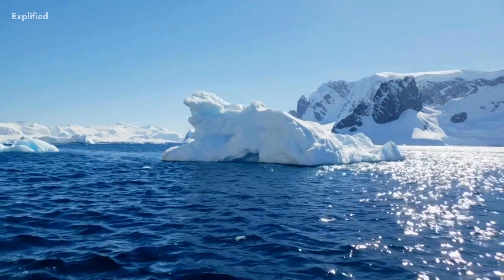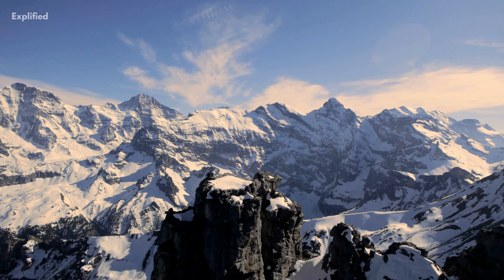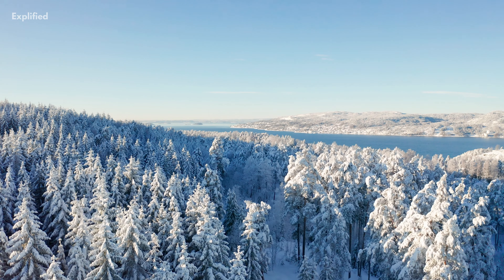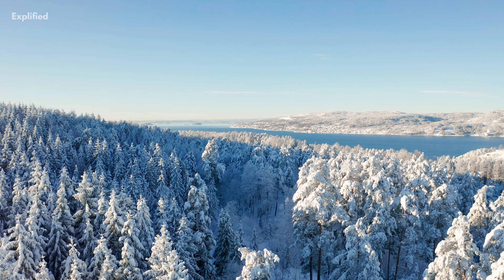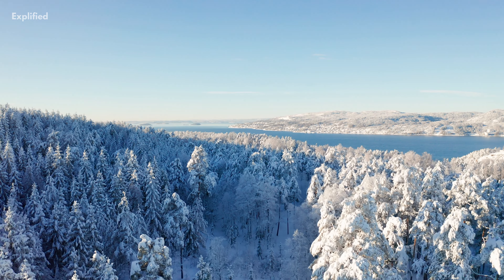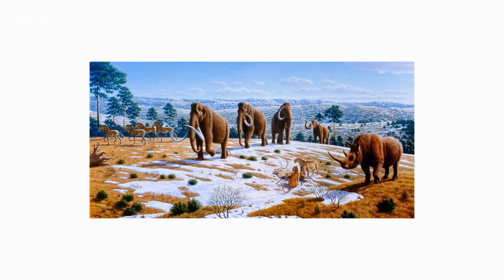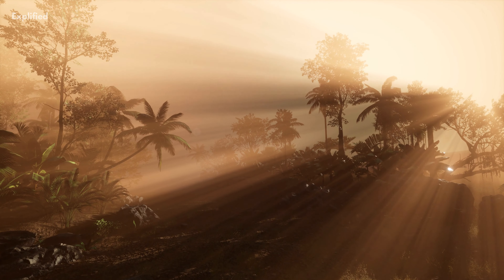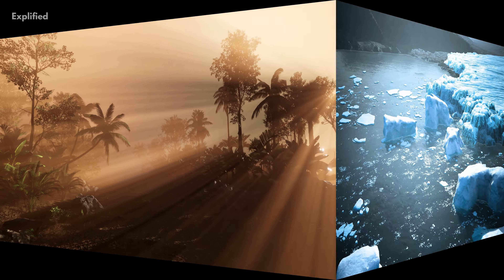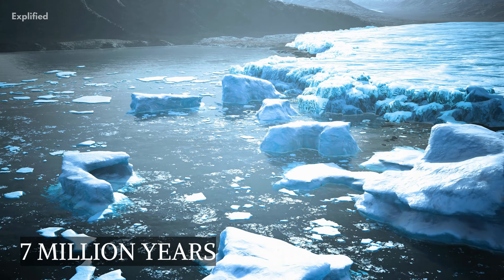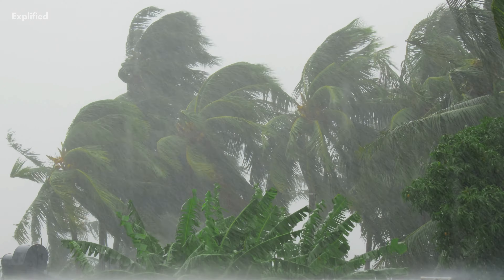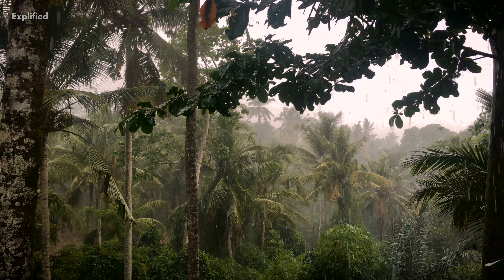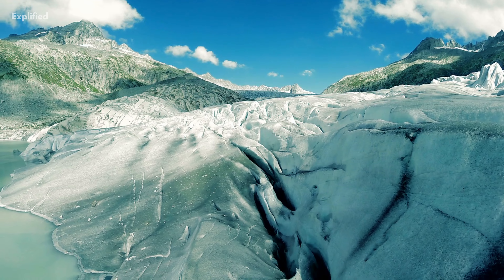Starting with the Oligocene climate, glaciers formed in Antarctica for the first time during the Cenozoic, signaling the beginnings of global cooling. Sea levels dropped as ice sheets grew larger, and the tropics faded, leaving cooler woods and grasslands in their place. This main cooling trend continued, ending in the Pleistocene ice ages, notwithstanding a brief episode of warmth in the late Oligocene.